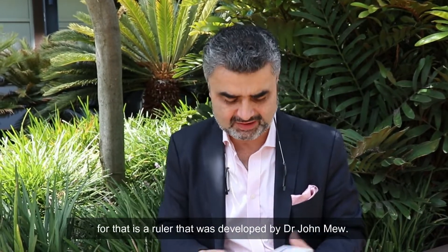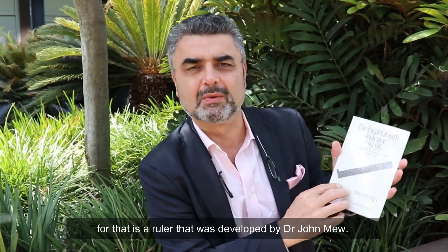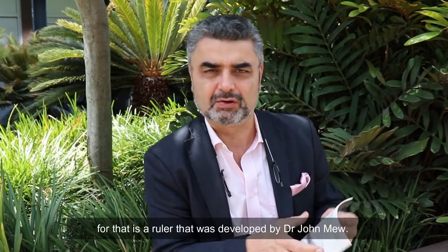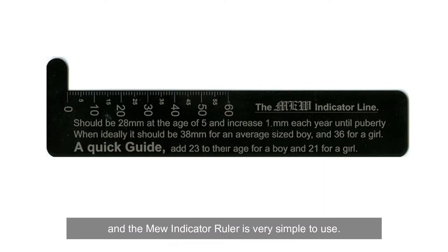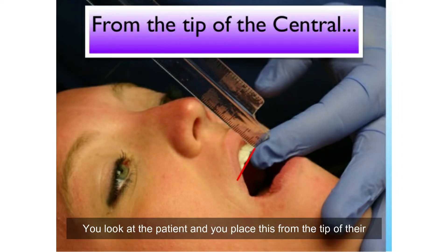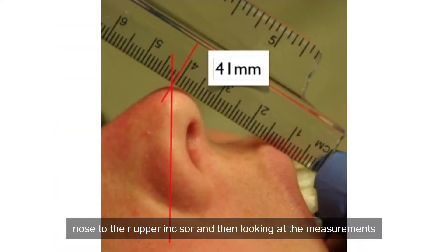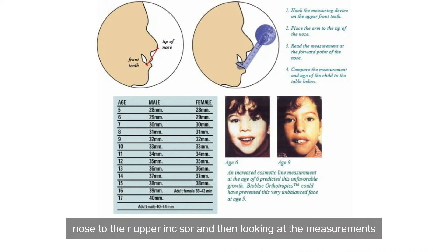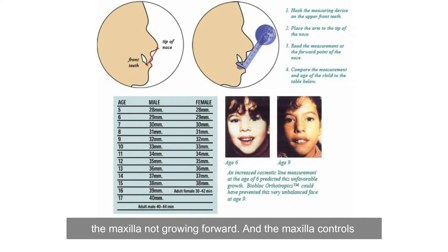One way we can screen for that is a ruler developed by Dr. John Mu. The Mu Indicator Ruler is very simple to use — you place it from the tip of the patient's nose to their upper incisor, and the measurements give you a guide as to whether that patient may be at risk for the maxilla not growing forward.